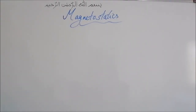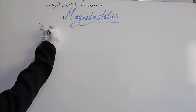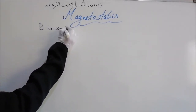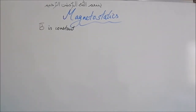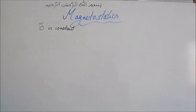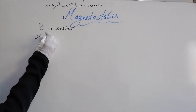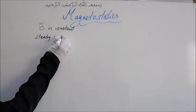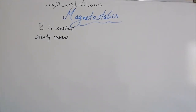We have already finished electrostatics, so now we are going to begin with magnetostatics. As the name suggests, magnetostatic means the magnetic field is constant — that is, the magnetic field does not change with time. The source of magnetostatics, the source required to produce a constant magnetic field, is a steady current. A steady current is a current which is independent of time and flows constantly along the length of the wire.